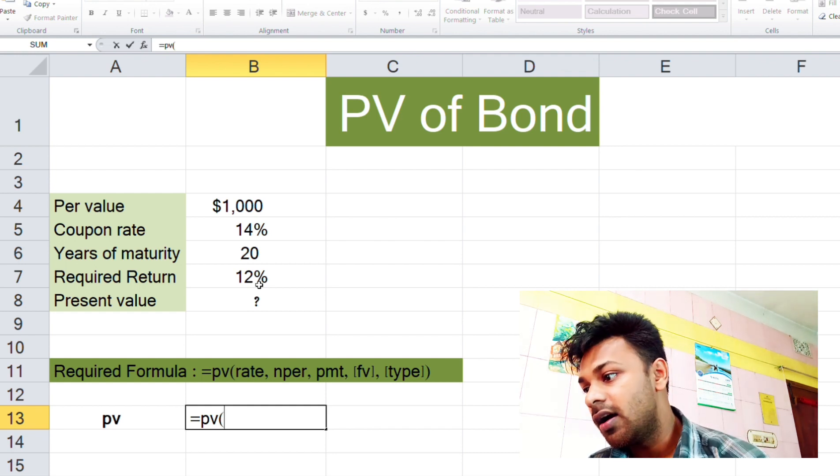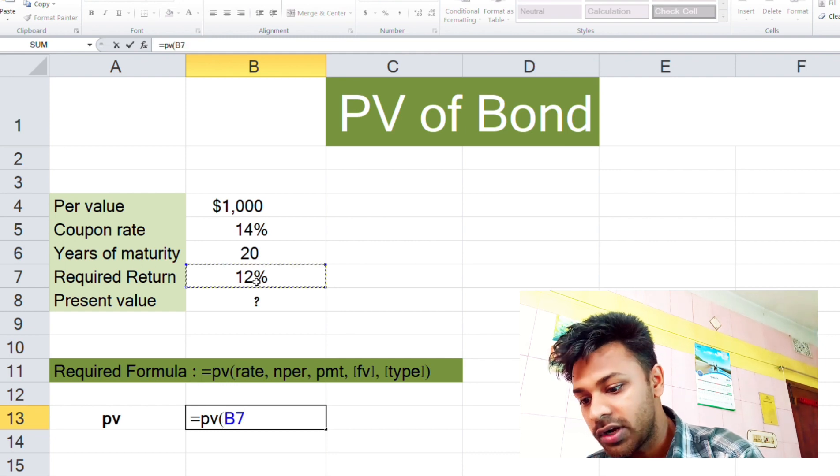And 'per' means number of years - number of years means years of maturity, which is 20. Again comma. Payment - here is the payment, 1000 par value.